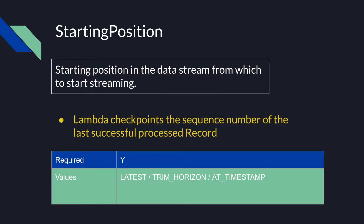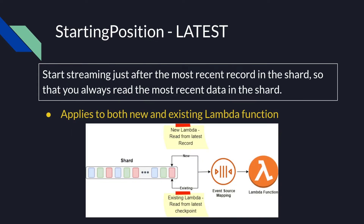Starting position defines the starting position in the data stream from which to start streaming. It's the Lambda service's responsibility to checkpoint the sequence number of the last successfully processed record. It's a required parameter and the valid values are latest, trim horizon, and at timestamp. Setting starting position to latest will start streaming just after the most recent record in the shard. For a new Lambda, it will read all records added after subscribing to the stream; for an existing Lambda, it will read from the last checkpoint.